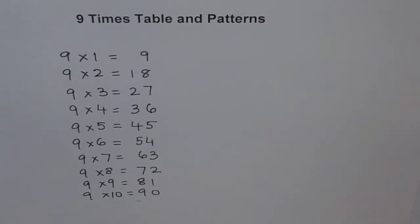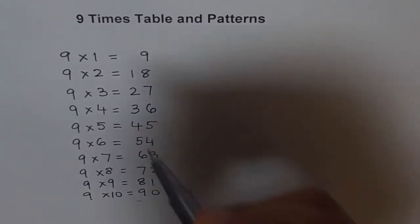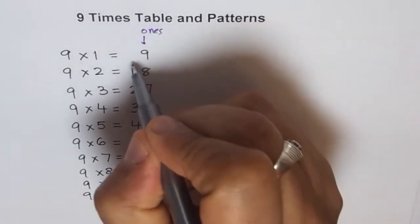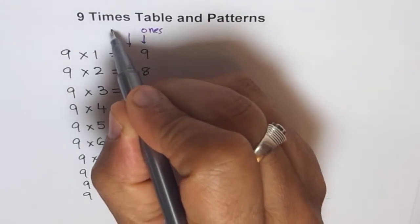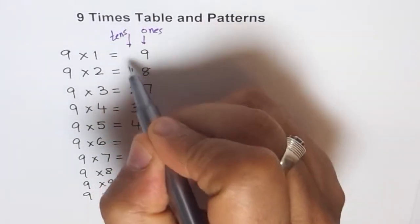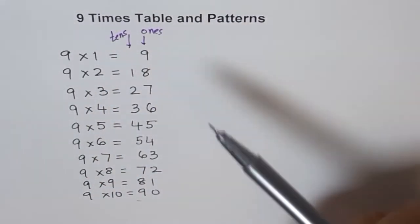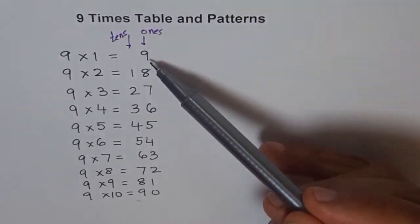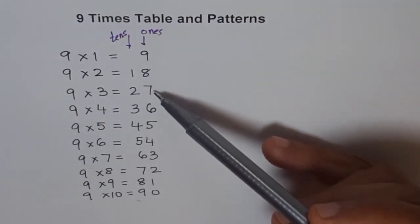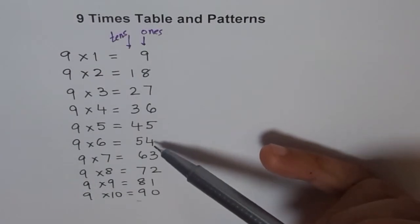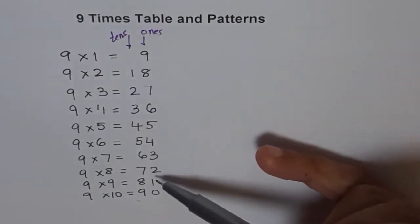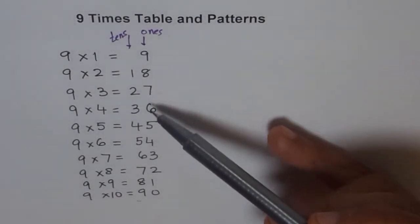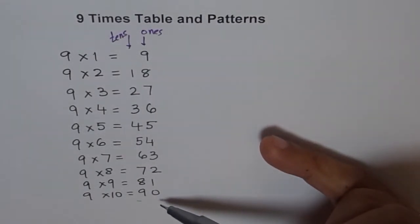Let's look at the ones place. This is the ones place, and these are the tens. What is the pattern in the ones place? 9, 8, 7, 6, 5, 4, 3, 2, 1, 0. The number decreases by 1 each time. Do you see that? If I do 9 times 11, I get 99 — it again starts: 9, 8, 7, 6, 5, 4, 3, 2, 1, 0. That's how numbers change in the ones place.